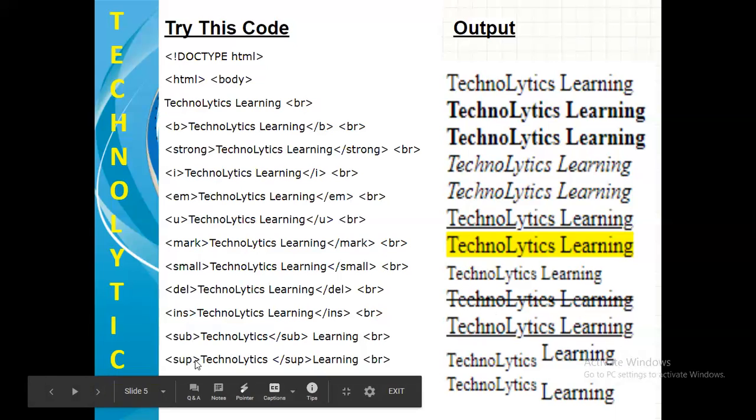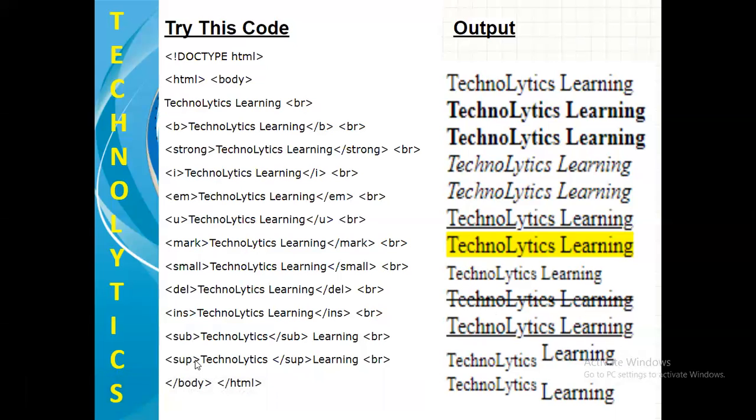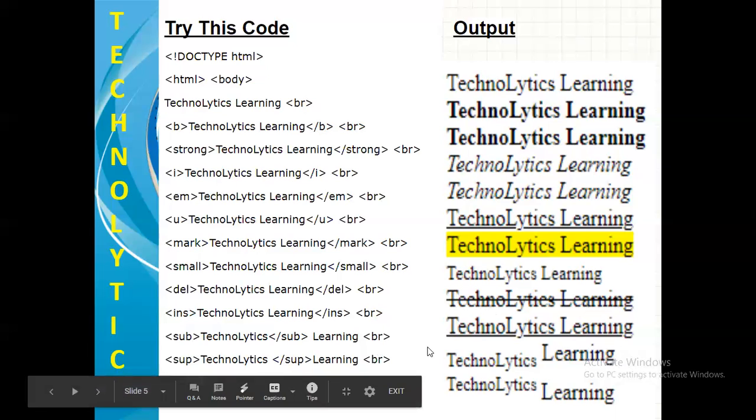Next is sup, that is superscript text. I have given this sup effect only for the TechnoLytics word. You can see learning is at the normal phase but TechnoLytics at little above than the normal place.